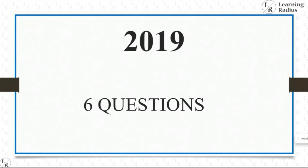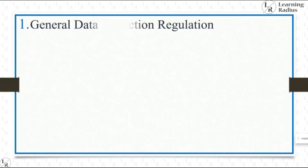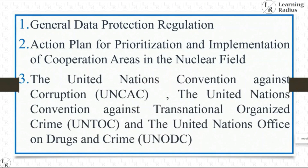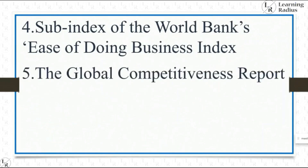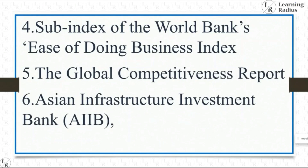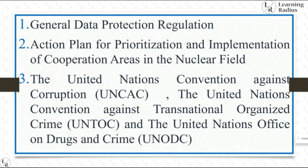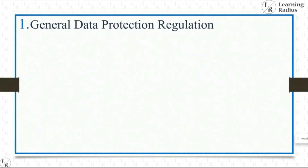Let's start with 2019 questions. In 2019, UPSC framed questions from: General Data Protection Regulation; Action Plan for Prioritization and Implementation of Cooperation Areas in the Nuclear Field; United Nations Convention Against Corruption (UNCAC); United Nations Convention Against Transnational Organized Crime (UNTOC); United Nations Office on Drugs and Crime (UNODC); subindex of the World Bank's Ease of Doing Business Index; Global Competitiveness Report; and Asian Infrastructure Investment Bank (AIIB).